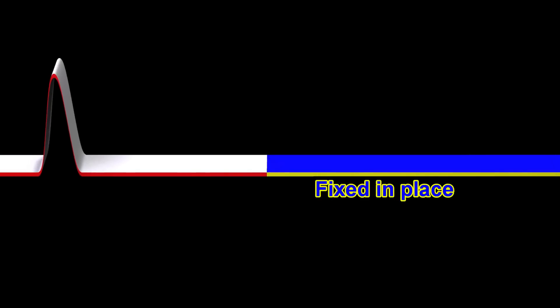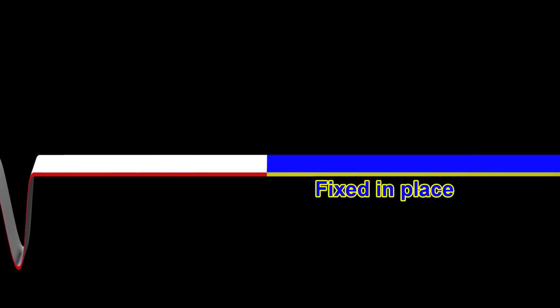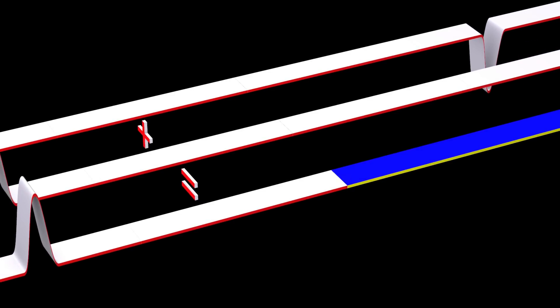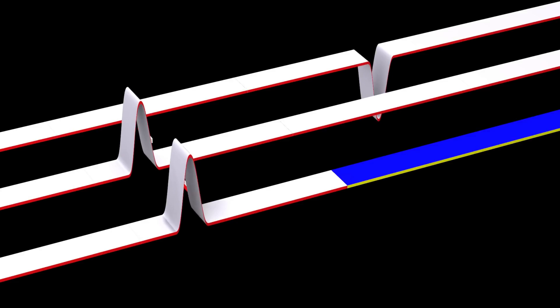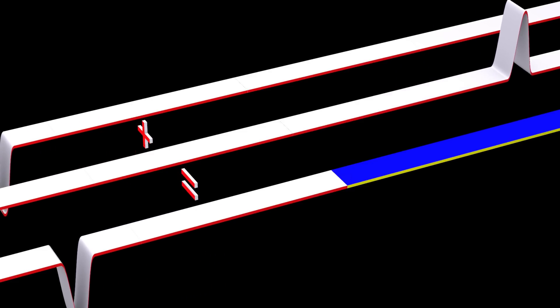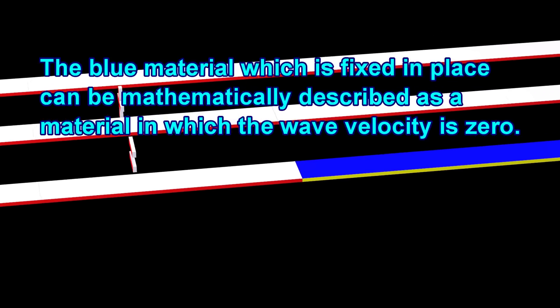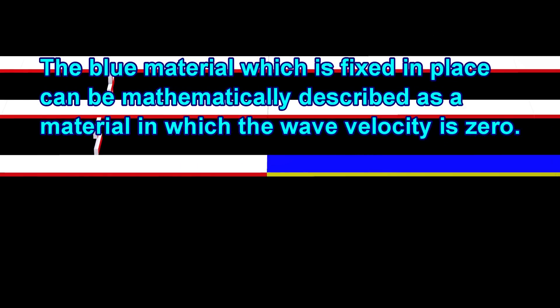Let us now consider what happens when the end of the material is fixed in place. This can mathematically be thought of as the following: at the end of the material, the total amplitude is always zero. The blue material, which is fixed in place, can be mathematically described as a material in which the wave velocity is zero.